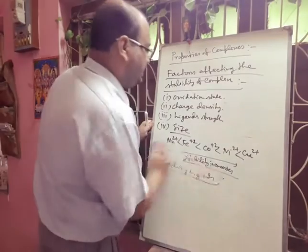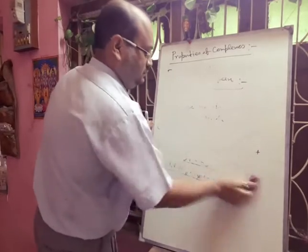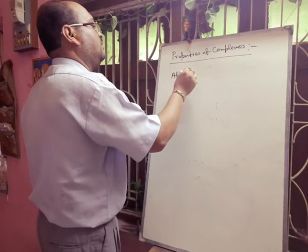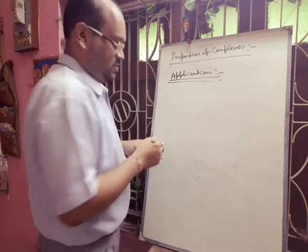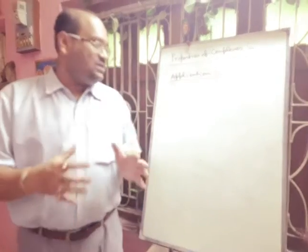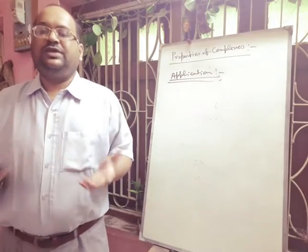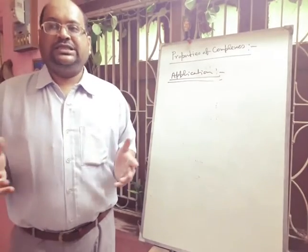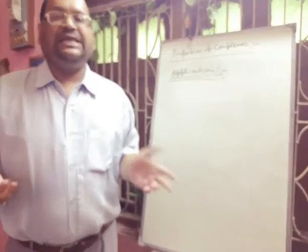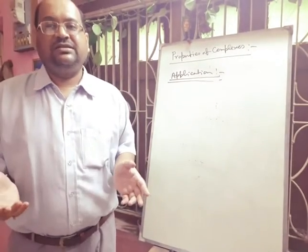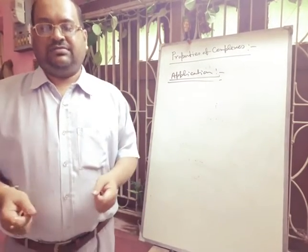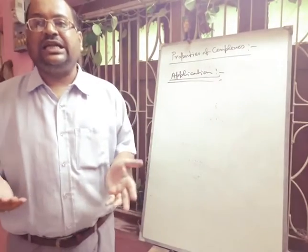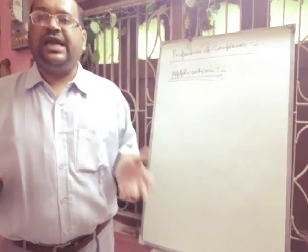Next we discuss applications of coordinate compounds. First, extraction of metals: Ni(CO)4 is used for the extraction and purification of nickel. Second, use in chemotherapy and medicine: EDTA (ethylenediaminetetraacetic acid) is used in treatment of lead poisoning; cisplatin is used as an anti-tumor agent in treatment of cancer. Third, as catalysts: Ziegler-Natta catalyst (a solution of TiCl4 and R3Al) is used for the polymerization of alkenes; Wilkinson's catalyst [RhCl(PPh3)3] is used for homogeneous catalytic hydrogenation.